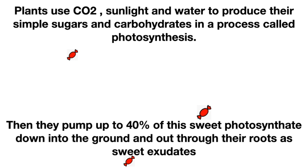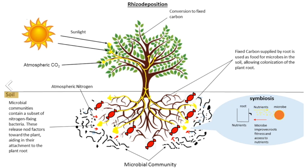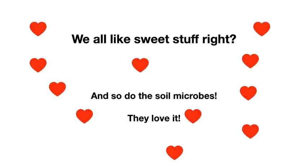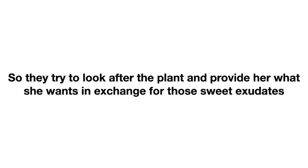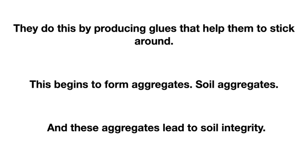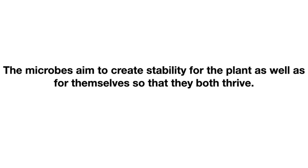They do this to keep the microbes happy — like a bartender who needs to keep his bar full, so every so often he announces happy hour, free drinks, and his customers come running. We all like sweet stuff, and so do the microbes — they love it. So they look after the plant and provide her what she wants in exchange for those sweet exudates. They do this by producing glues that help them to stick around. These glues begin to form soil aggregates, and these soil aggregates lead to soil integrity. These glues stick other bits of material together to create stable aggregates, and in turn, soil integrity makes the soil capable of withstanding heavy showers, storms, and even compaction. The microbes create stability through the soils for themselves and the plants so that they both thrive.